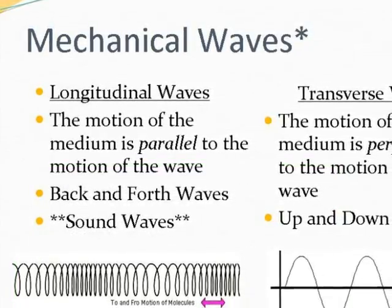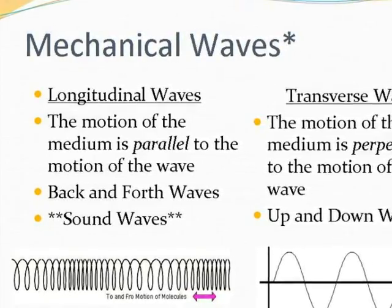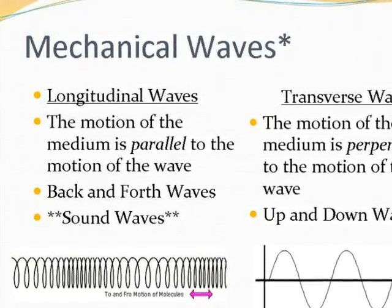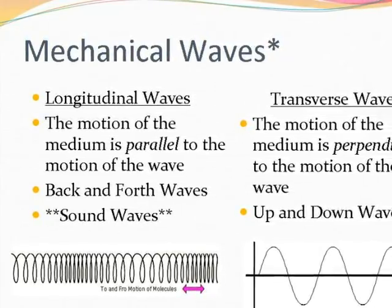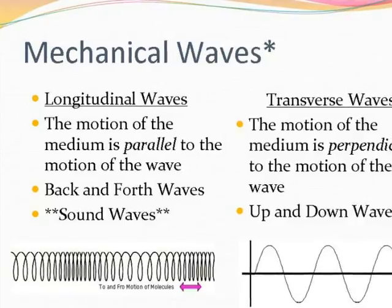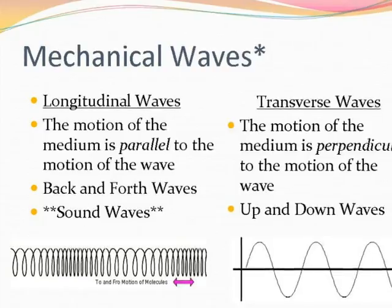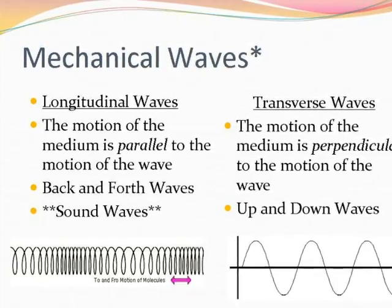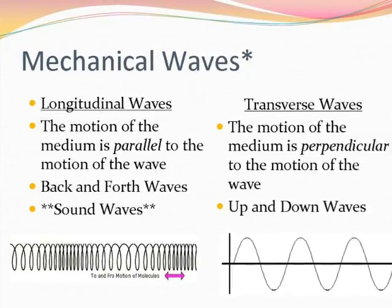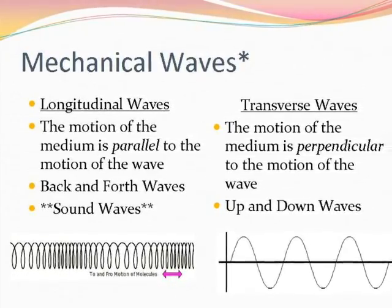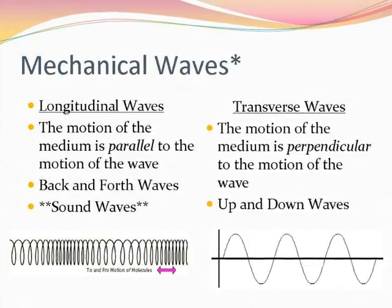While all waves share some basic characteristic properties and behaviors, they do have differences that are used to group or categorize them. One such category is the movement of the medium compared to the motion of the wave. This motion determines whether the wave is transverse or longitudinal. With transverse waves, the motion of the medium forms a right angle with the motion of the wave. However, the motion of the medium and the motion of the wave are parallel with longitudinal waves.